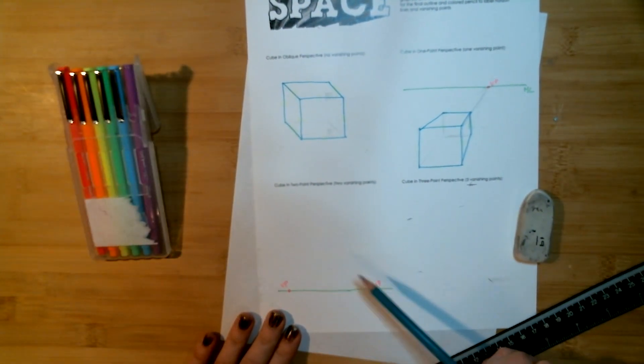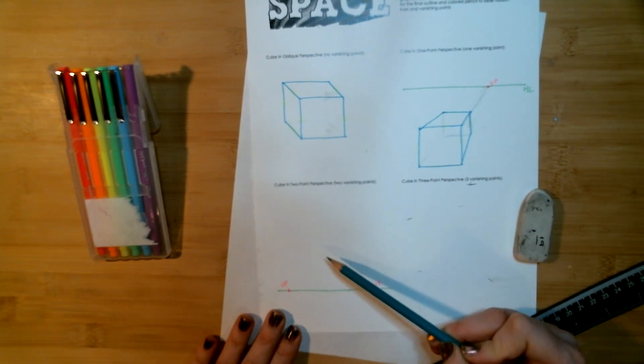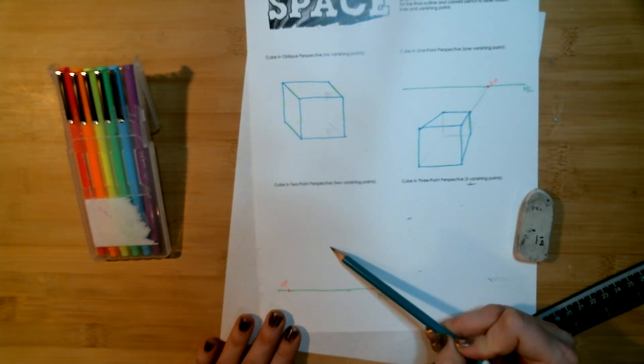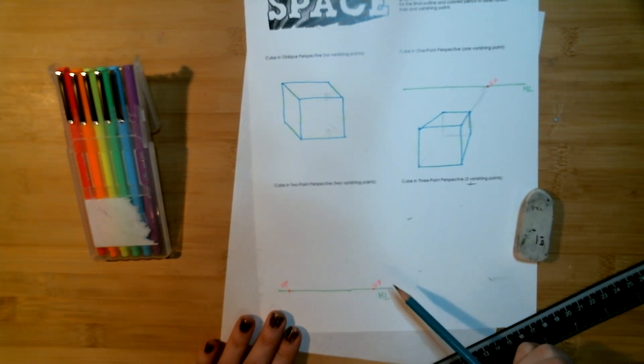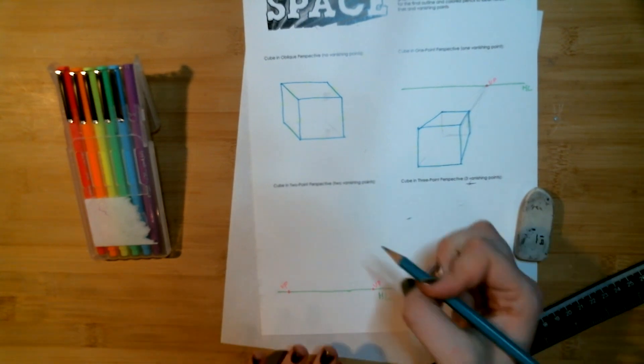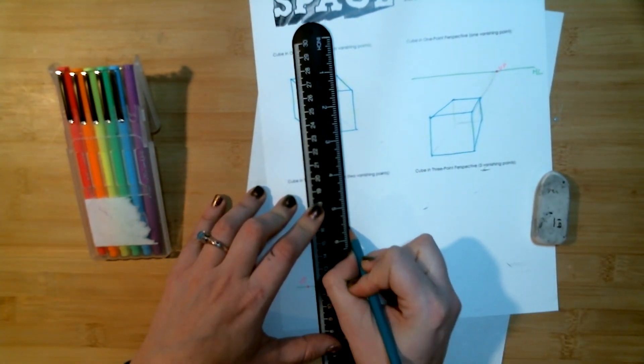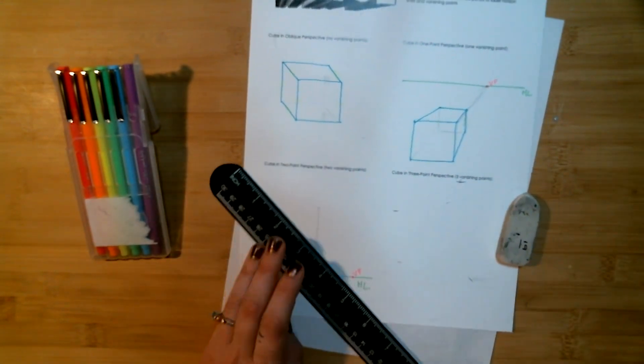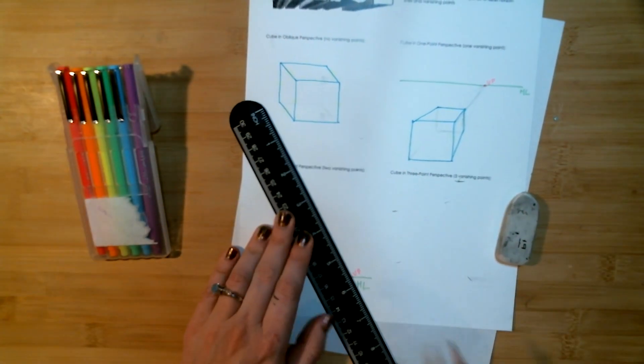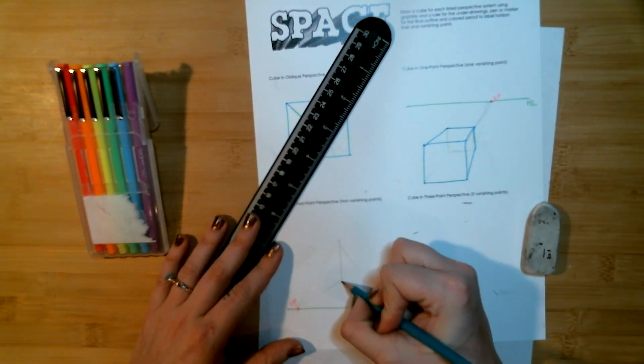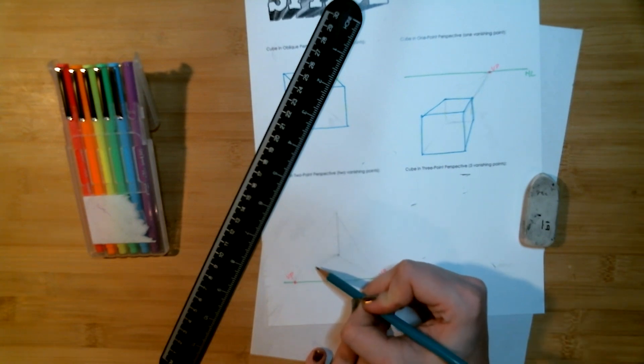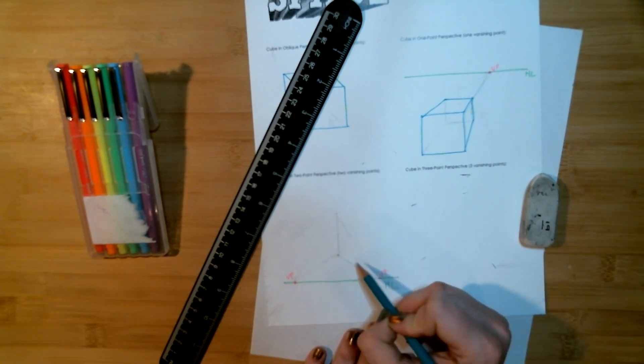So now that I have my two series of vanishing points right here I'm going to go ahead and lay in my vertical lines. I'll start with the vertical corner of the box that will be facing us the closest and then I'm going to start connecting those to my vanishing points. Now I'm going to choose the back sides of the box and then connect those to their opposite.